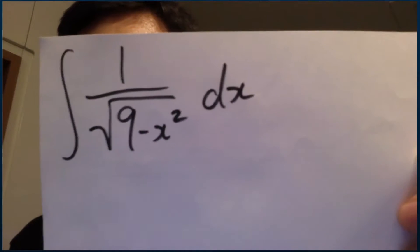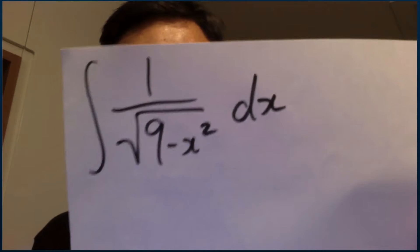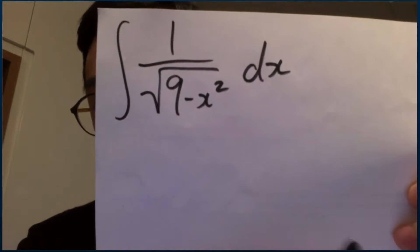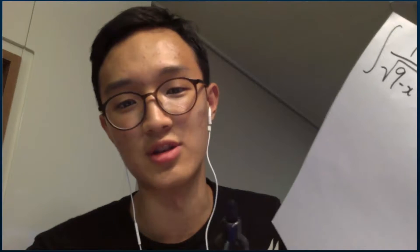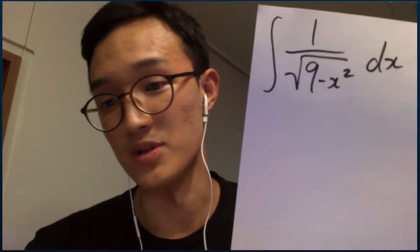Now if you see this integral, if you just use u-substitution or some other technique that you learned earlier, you might try to use something like u equals 9 minus x squared, but this actually makes another integral that's really difficult to solve, pretty much impossible to solve. So instead of using u-substitution, we can use a different kind of substitution.